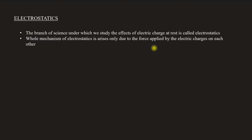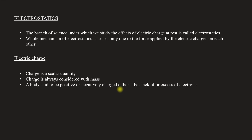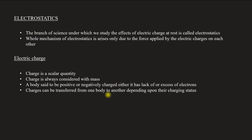An electric charge is a scalar quantity. The charge is always considered with mass. A body is said to be positively or negatively charged if it has a lack of or excess of electrons. A positive charge means that electrons have left that body. The charge can be transferred from one body to another depending upon their charging status.